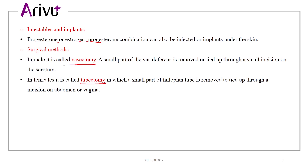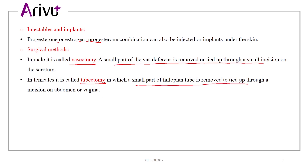Vasectomy happens in males, where a small part of the vas deferens is removed or tied up. Tubectomy means the fallopian tube is removed or tied up.